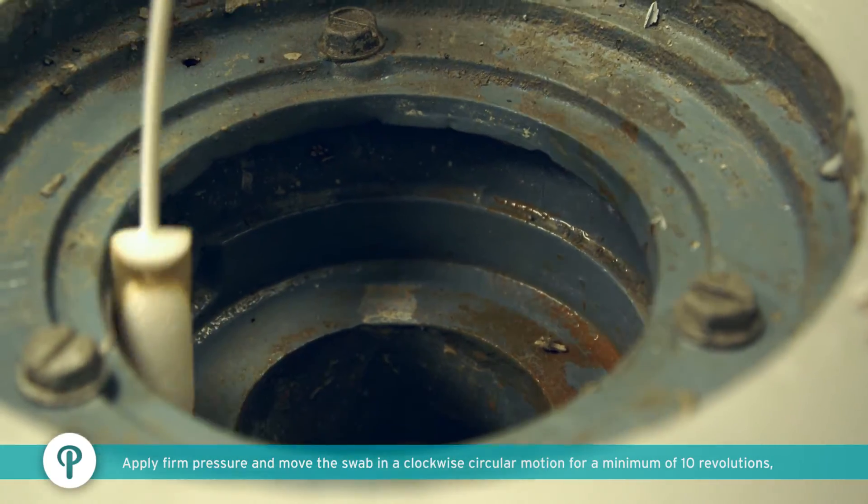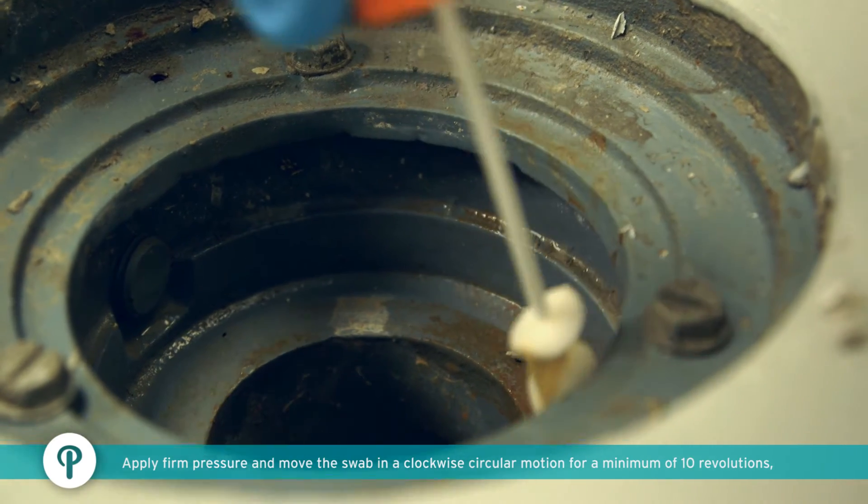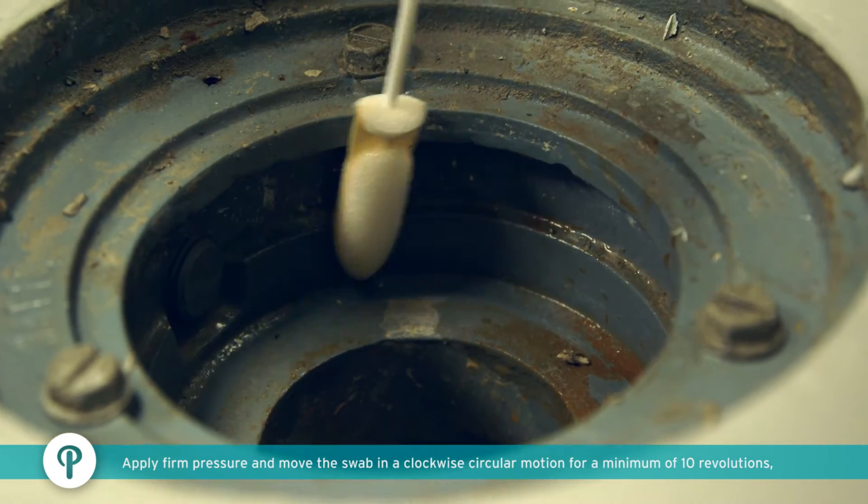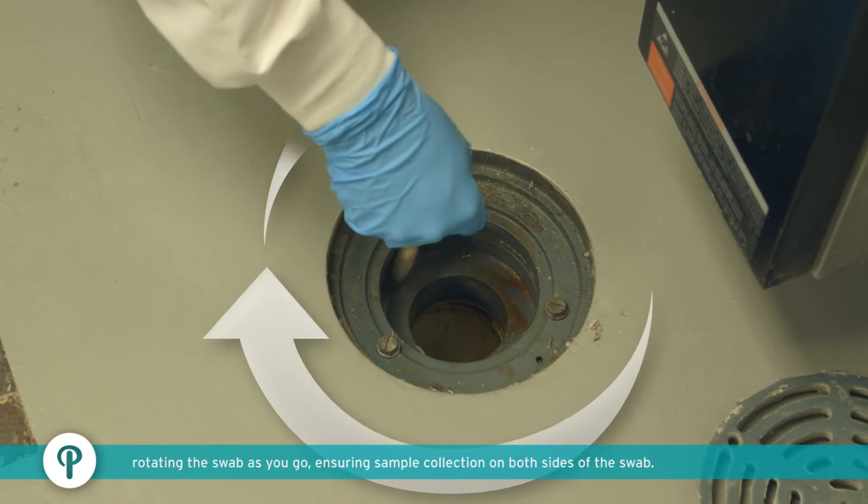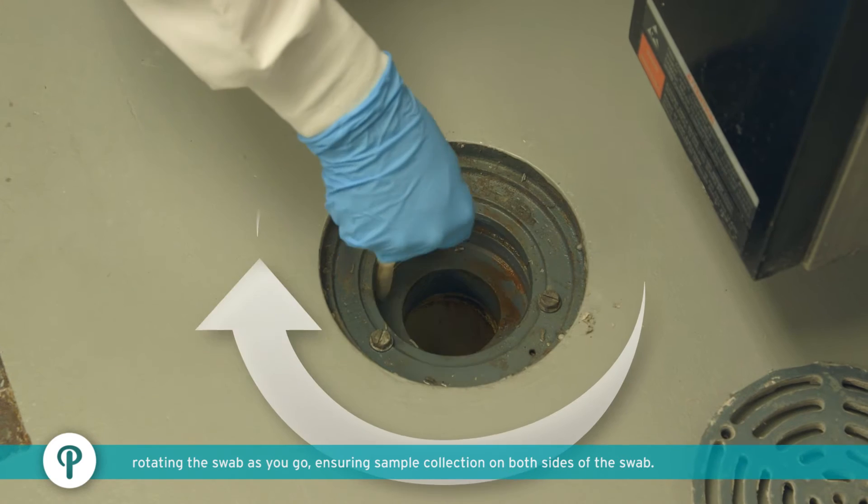Scrub the dry residue from the floor drain walls by applying firm pressure and moving the swab in a clockwise circular motion for a minimum of 10 revolutions, rotating the swab as you go to ensure sample collection on both sides of the swab.